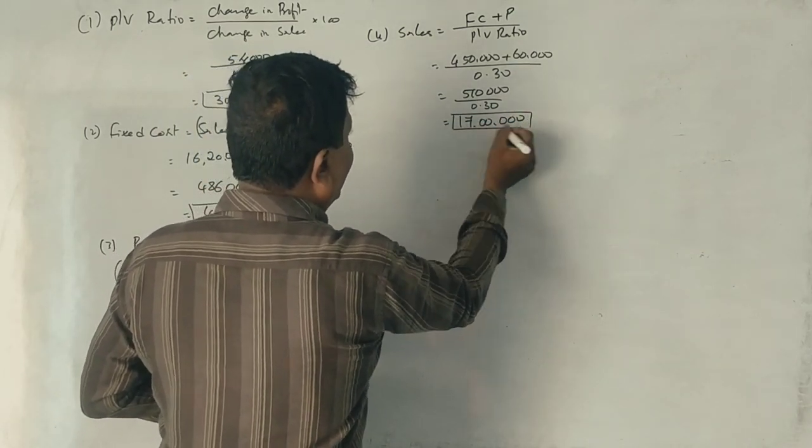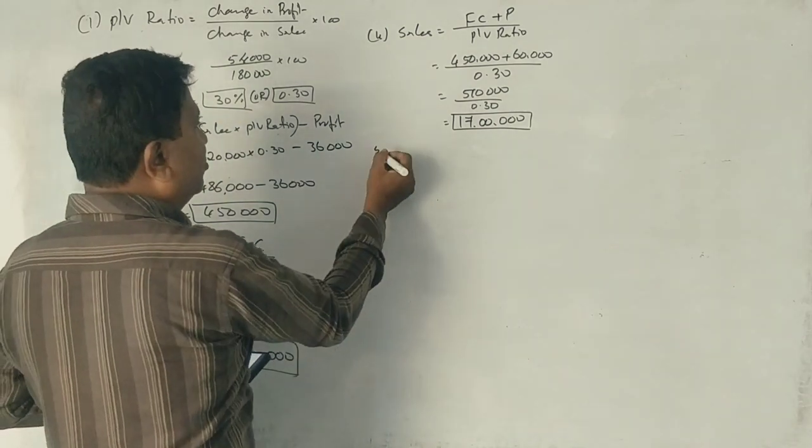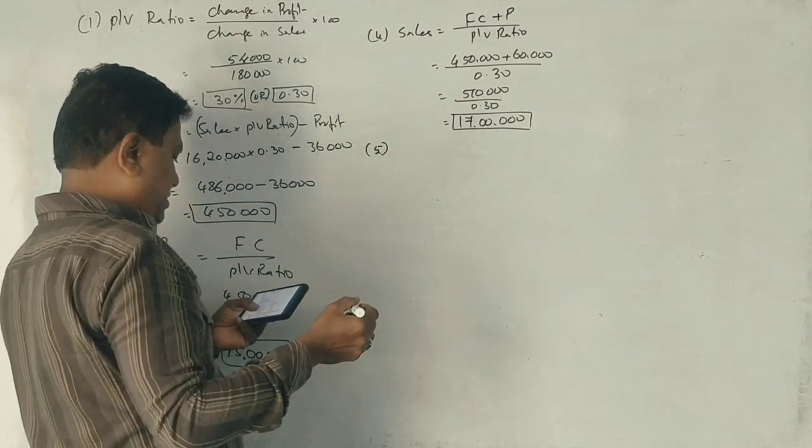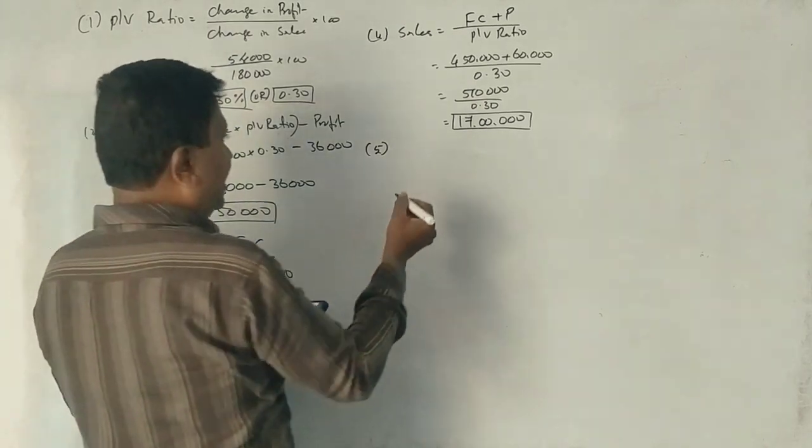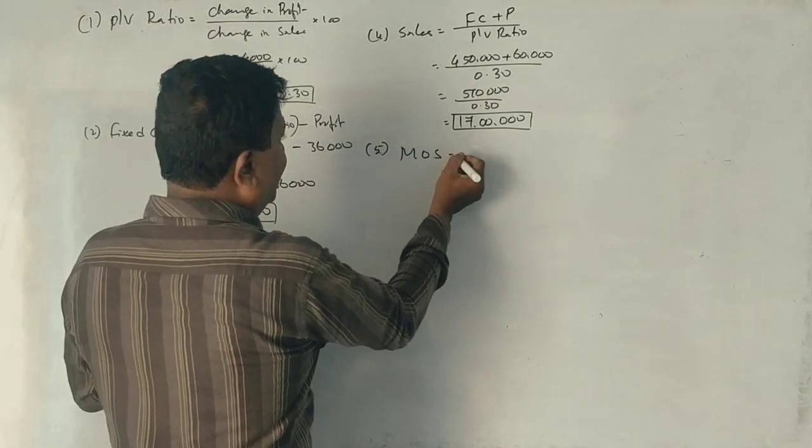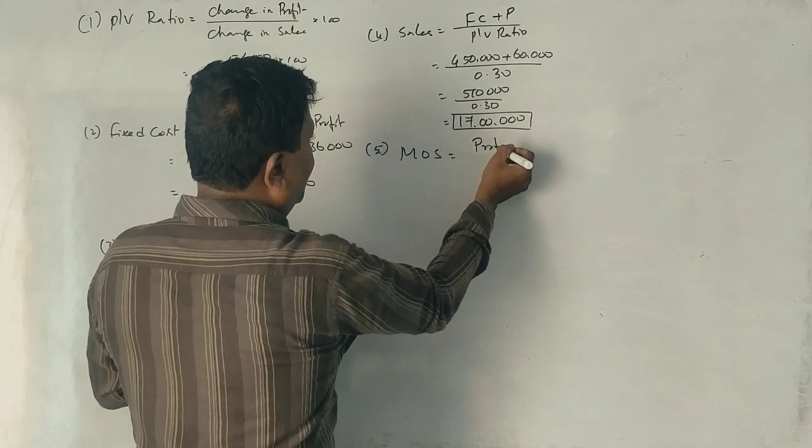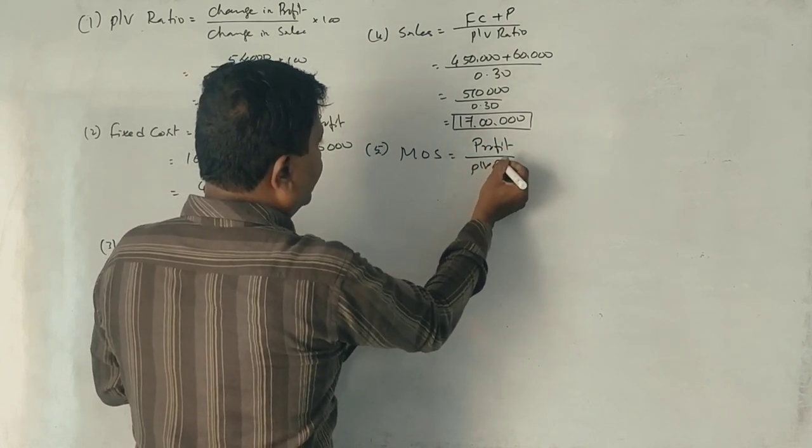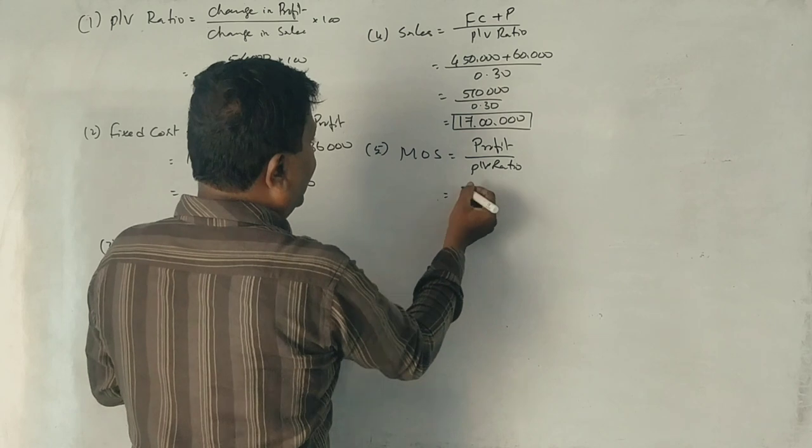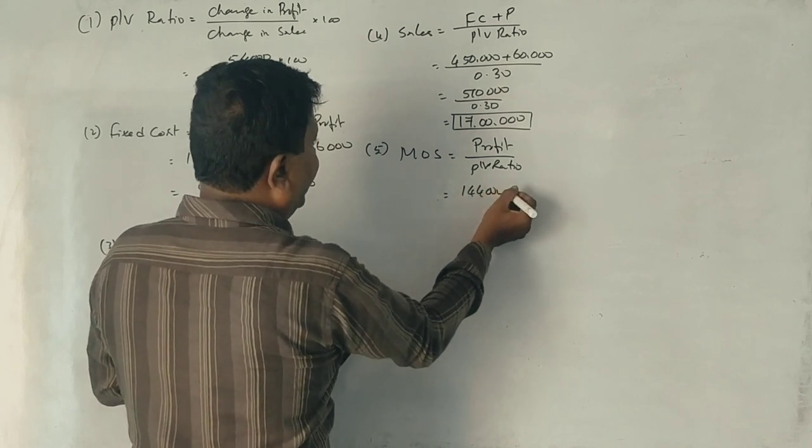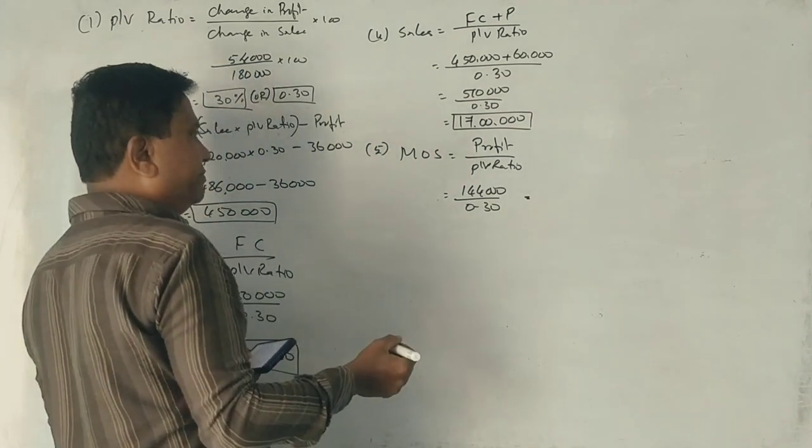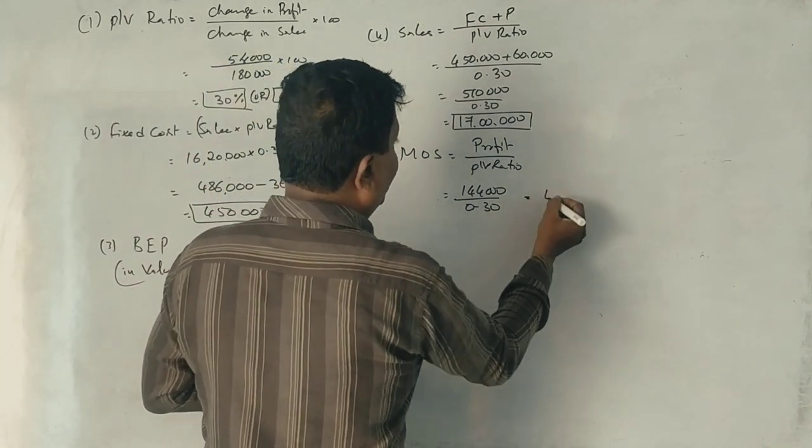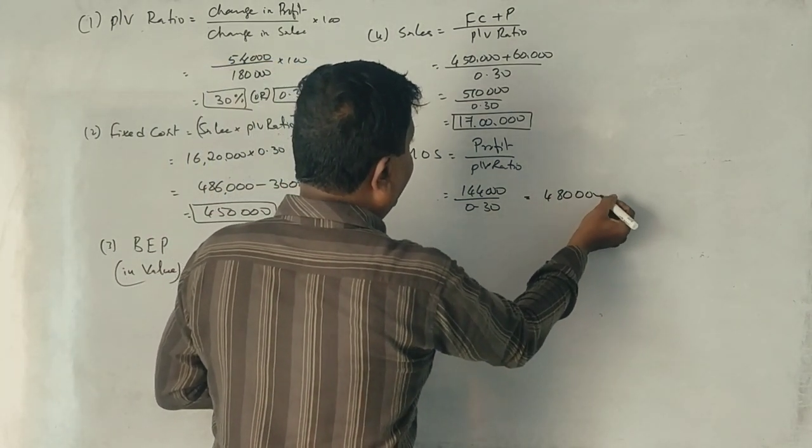Next question, margin of safety at 1,44,000 profit. Margin of safety equals profit divided by P/V ratio. 1,44,000 divided by 0.30 is 4,80,000.